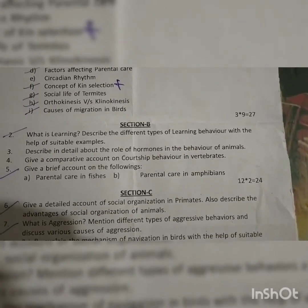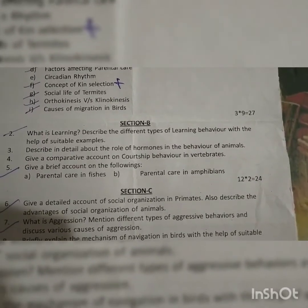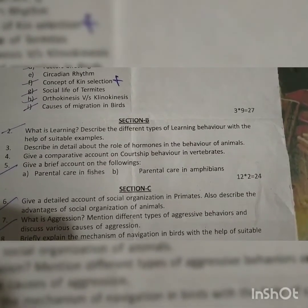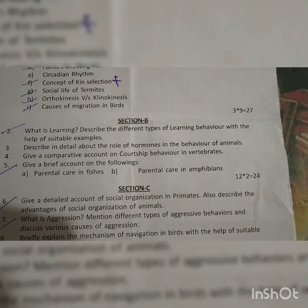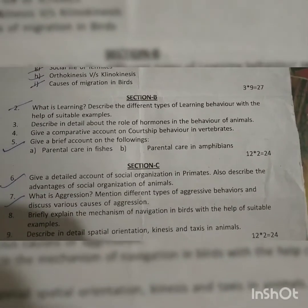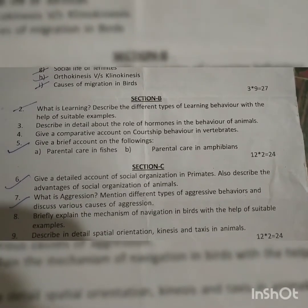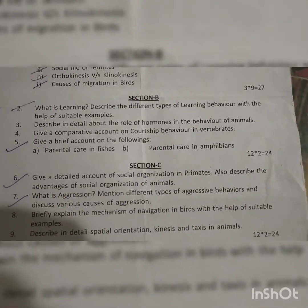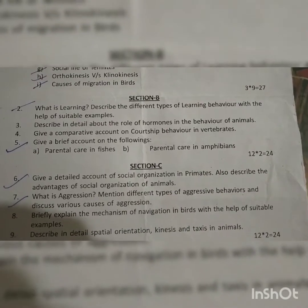Third question: Describe in detail about the role of hormones in the behavior of animals. Fourth: Give a comparative account on courtship behavior in vertebrates.